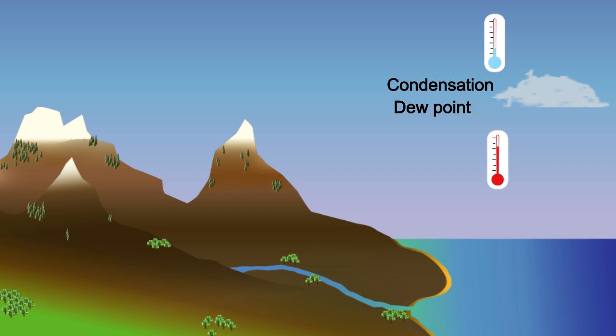We can imagine the dew point as a temperature limit. Below this temperature limit, the air is still warm enough and can hold enough water. Above this temperature limit, the air is too cold to hold so much water vapor, causing condensation to occur.